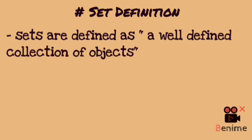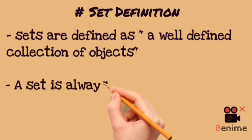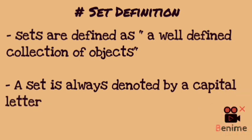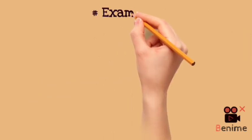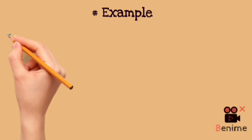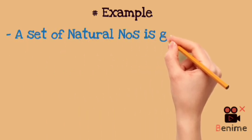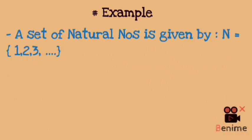We always denote a set with capital letters. For example, if I have the set of natural numbers, I will represent it with capital N. So N is equal to {1, 2, 3, 4, 5, 6, ...}. This is an infinite set — the total number of elements is not defined here, because natural numbers go to infinity.